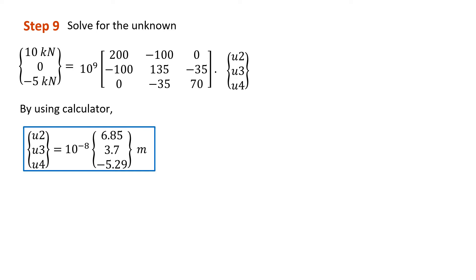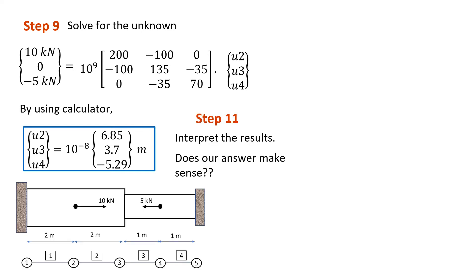Next, we jump to step 11: ask ourselves, does our answer make sense? U2 has the highest displacement, which makes sense because node 2 has the highest applied load and it is positive, so our answer is positive and has the largest magnitude. U4 is negative, which is logical because we have a negative load applied there, and its magnitude is lower than U2 since the load at node 4 is smaller than at node 2.